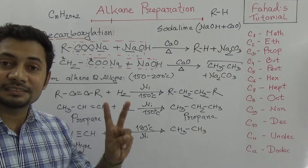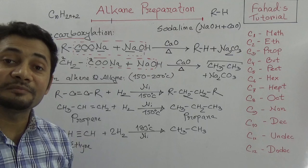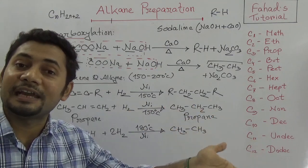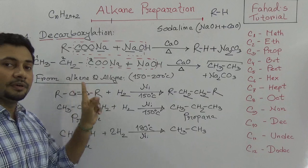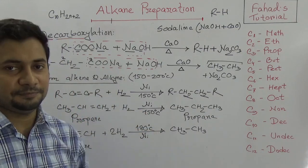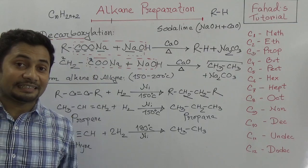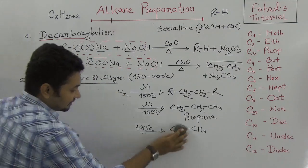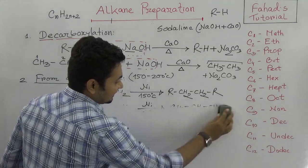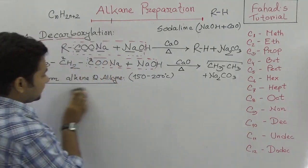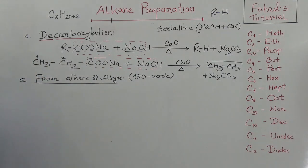So the second method of alkane preparation is from alkene and alkyne — the process uses hydrogen with nickel as catalyst. Nickel works as the catalyst. The third and last process in this tutorial is the Wurtz reaction.